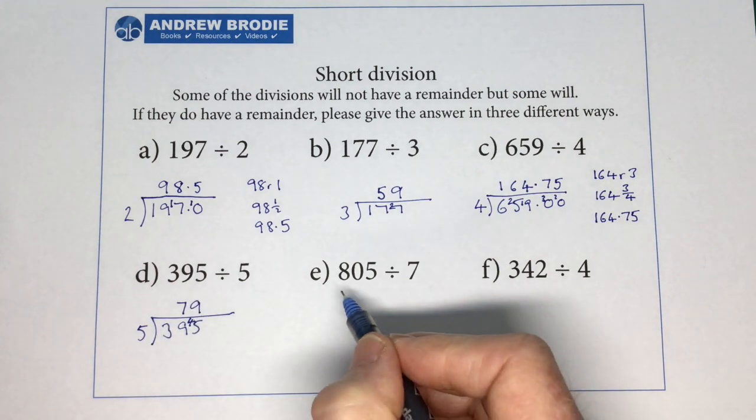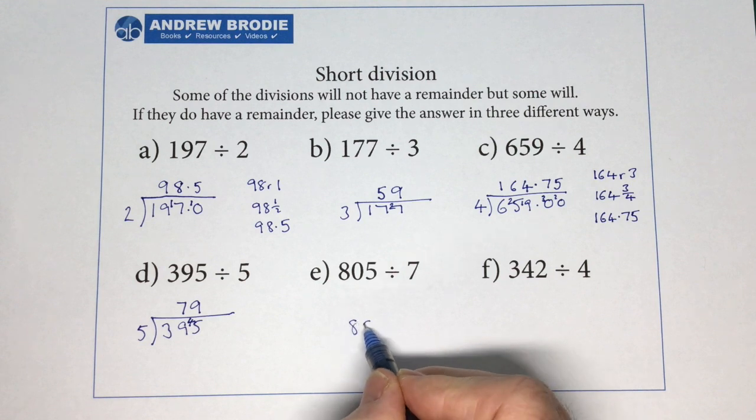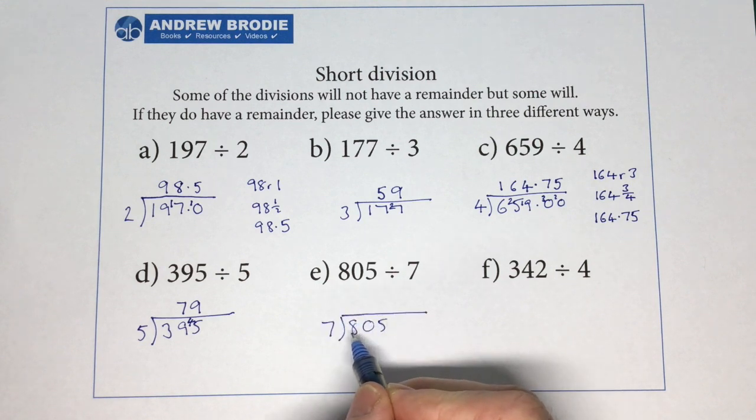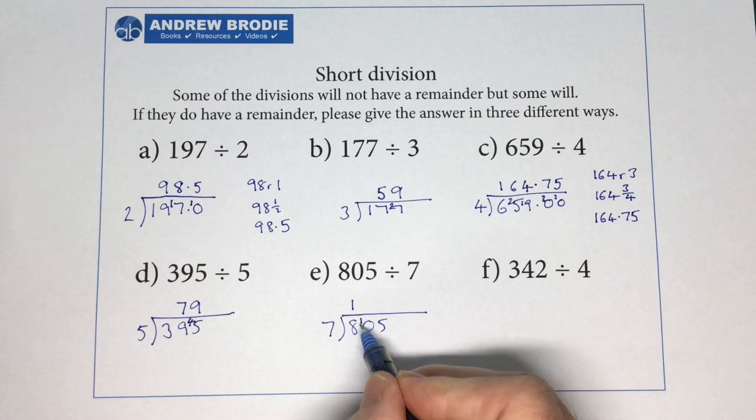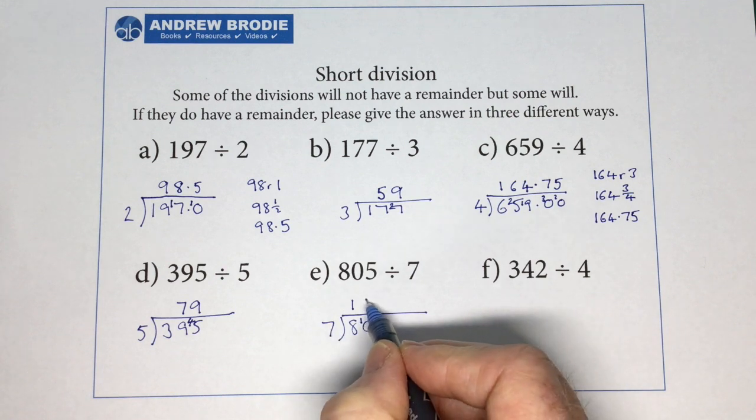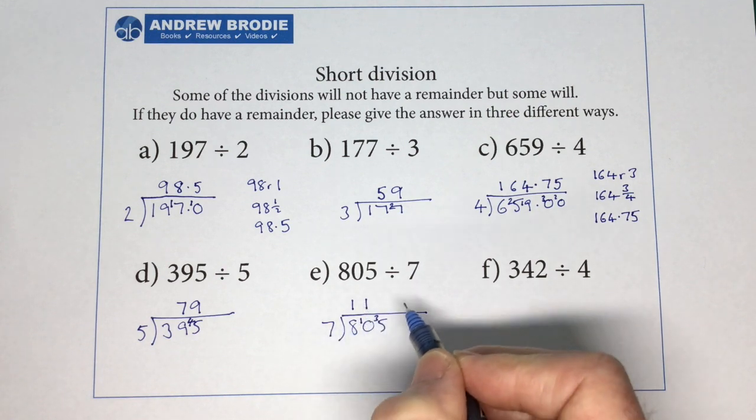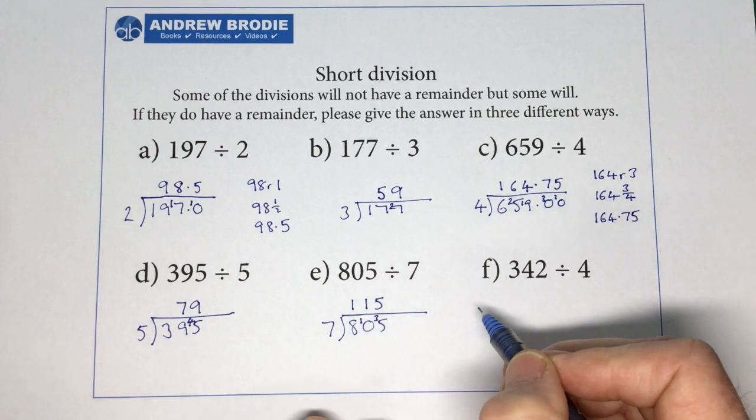This one, 805 divided by 7. 7 into 8 goes 1 with 1 left. 7 into 10 goes 1 with 3 left. 7 into 35 goes 5 times. There's our answer.